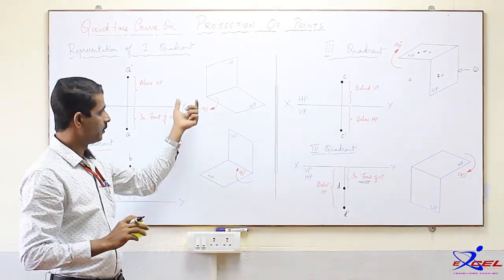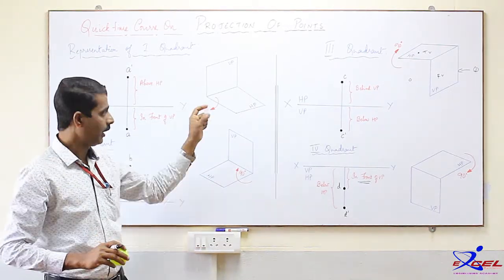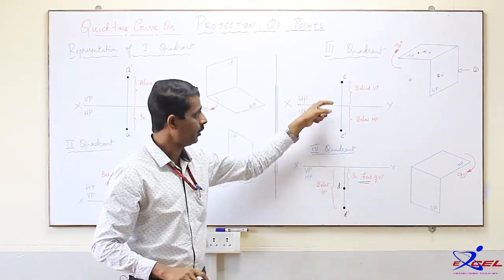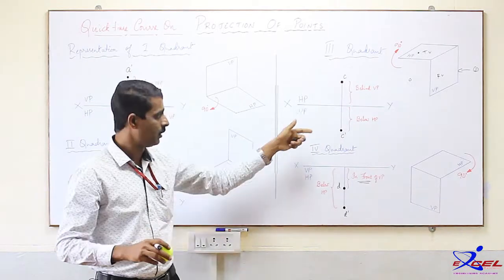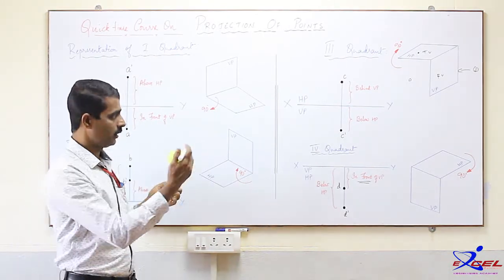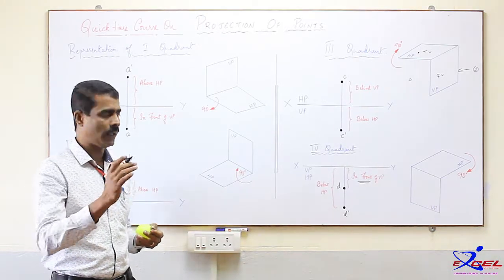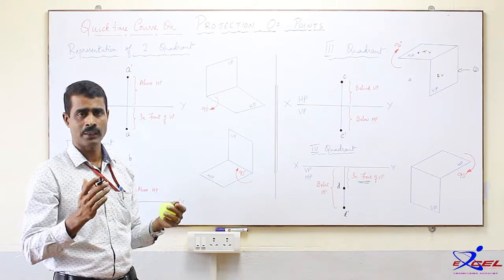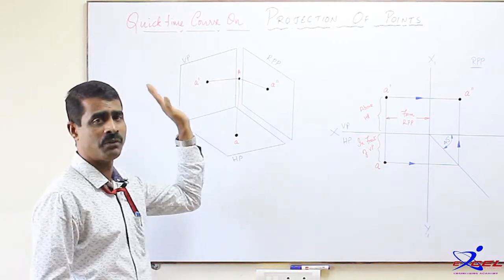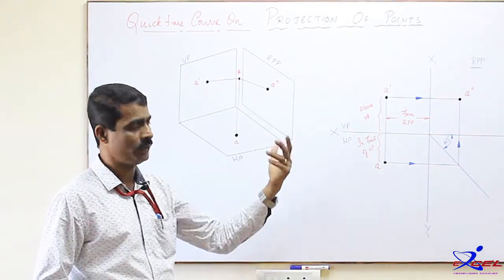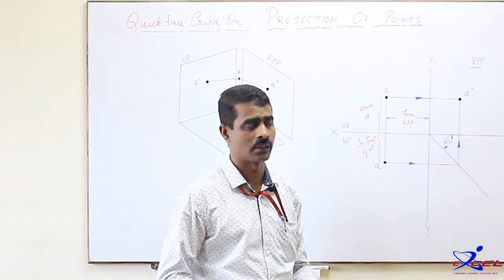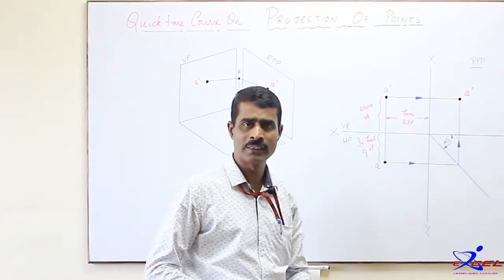These are the representations we need to remember, along with the location of points in each quadrant. First, understand which quadrant the point lies in; then, based on the distances from VP and HP, we can get the top and front views. Now, suppose the profile plane distance is given — the right profile plane or left profile plane distance — how do we draw the profile view or side view?